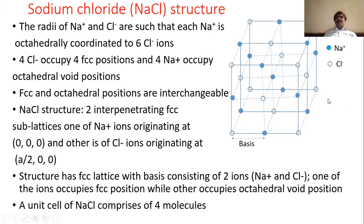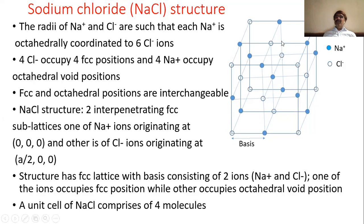The next special structure is NaCl, or sodium chloride, which is a common salt. The number of Na⁺ and Cl⁻ ions in a unit cell depends on the ratio of their radii. The Na⁺ and Cl⁻ possess radii such that Na⁺ is octahedrally coordinated to 6 Cl⁻ ions. The unit cell contains 4 formula units.